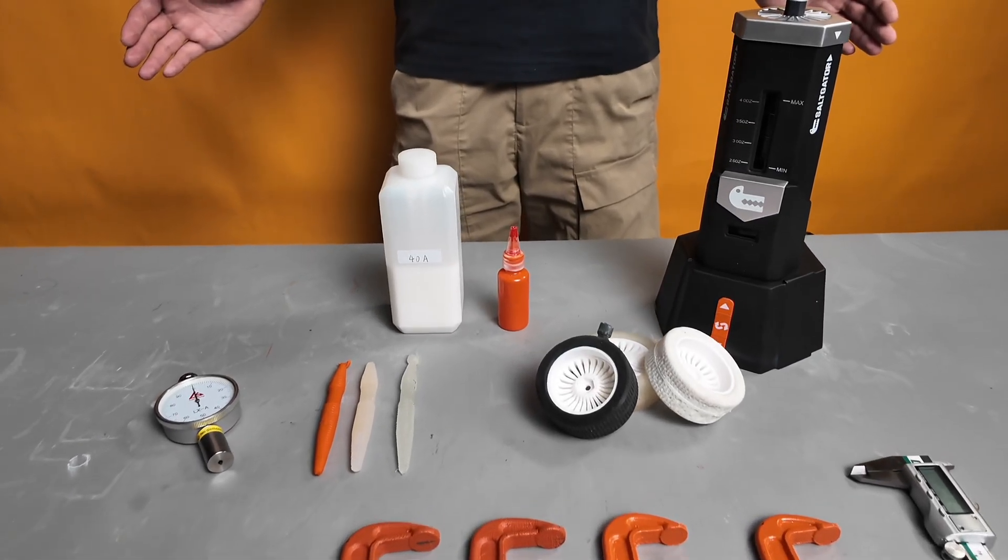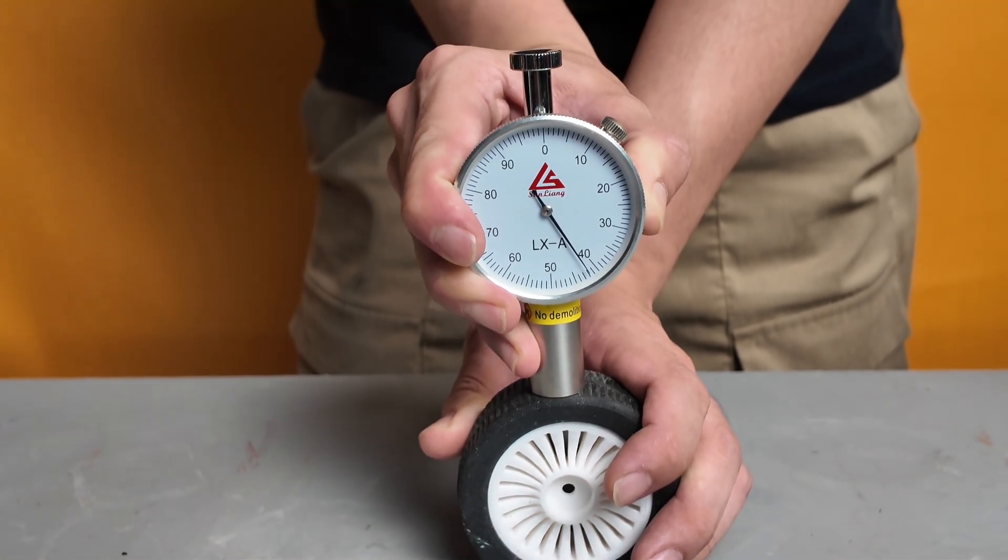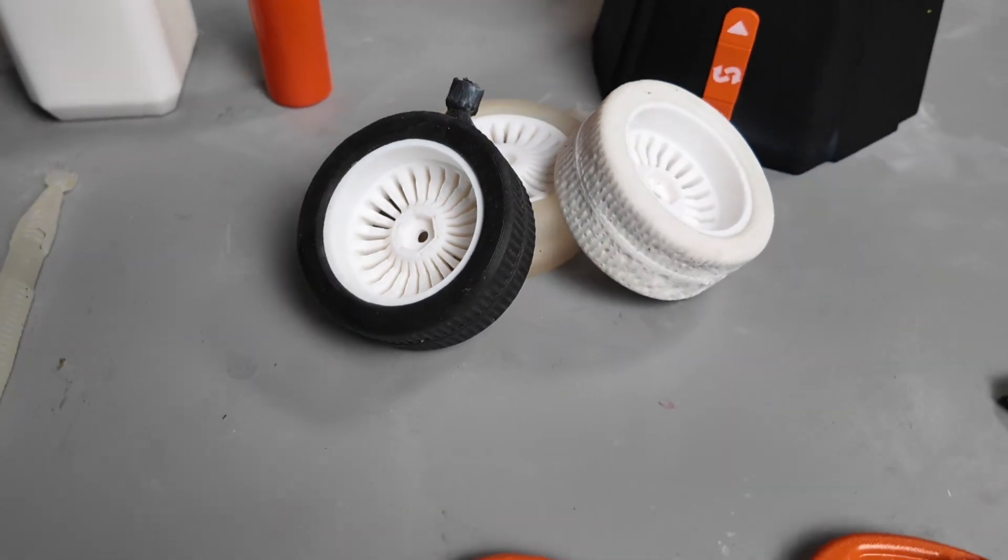Welcome to Salt Gator! Today we're showcasing 40A hardness with a treaded tire plus a side-by-side comparison of 0A, 20A, and 40A mealworm lures.